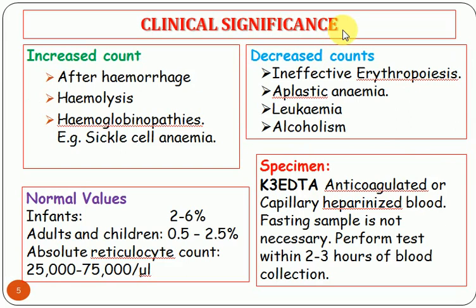Regarding clinical significance: reticulocyte count is increased in hemorrhage (after severe bleeding), hemolysis (breakdown of RBC), and hemoglobinopathies like sickle cell anemia, where the RBC shape becomes sickle-shaped instead of biconcave. Decreased counts are seen in ineffective erythropoiesis and aplastic anemia.